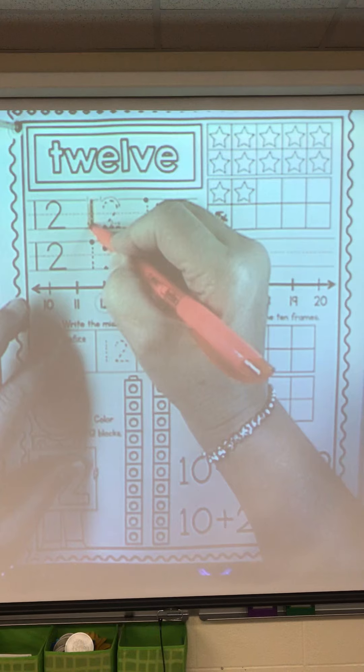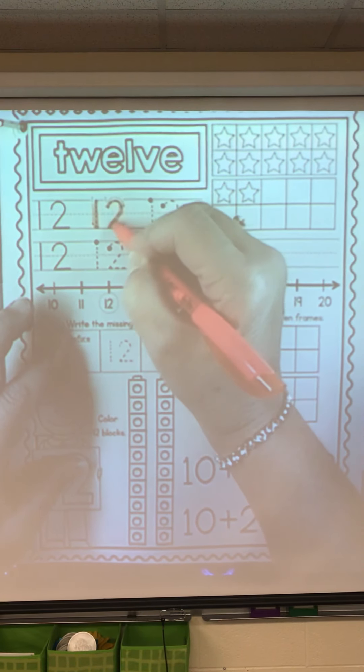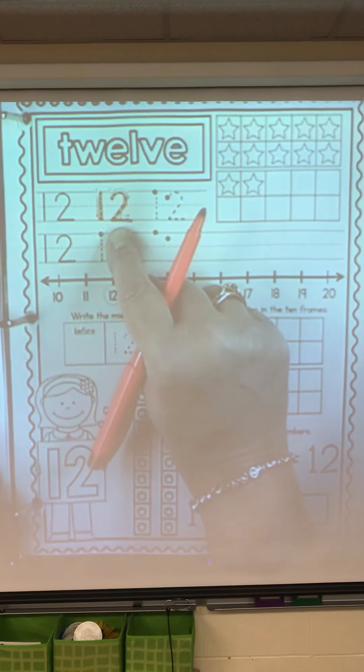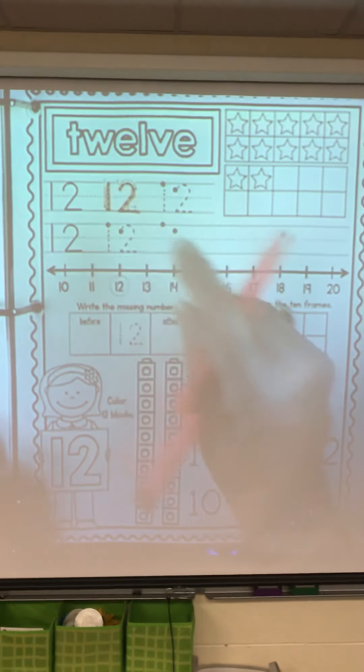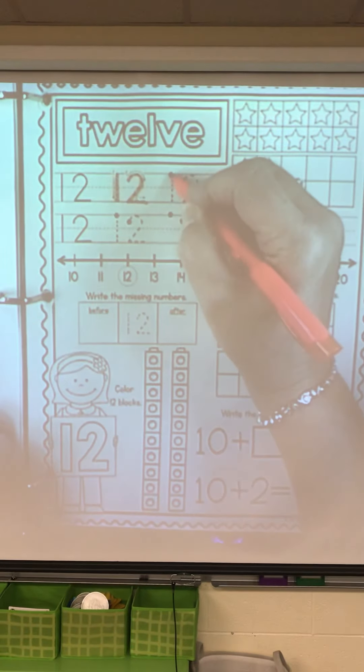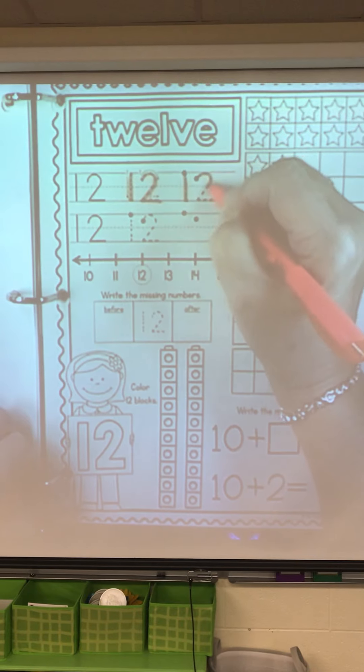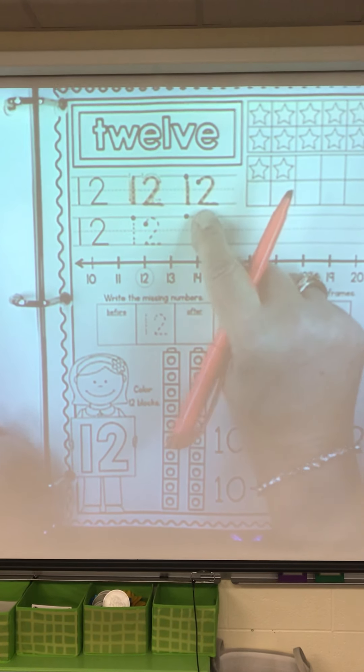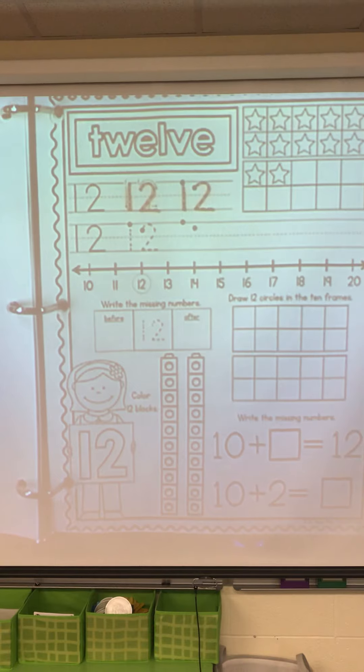First a 1, then a 2. That's a 12, that's a 12, that's a 12. First a 1, then a 2. That's a 12, that's a 12, that's a 12.